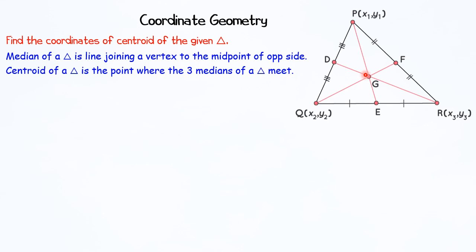This means if you take a triangular metal plate and want to balance it on the tip of your finger, you will have to keep your finger at this point G, the centroid.